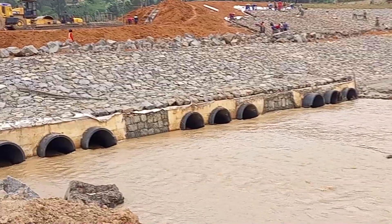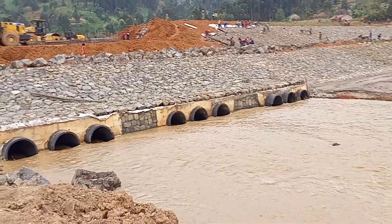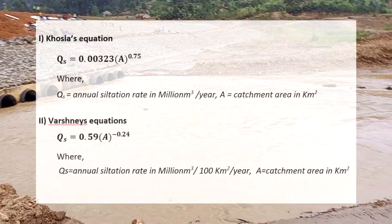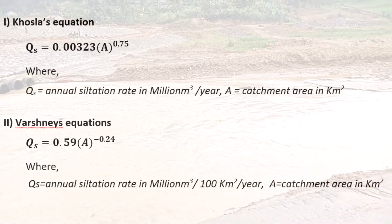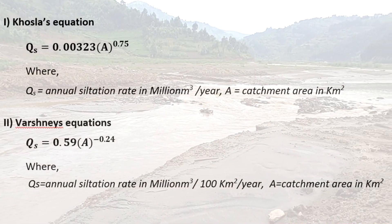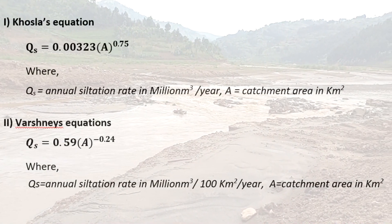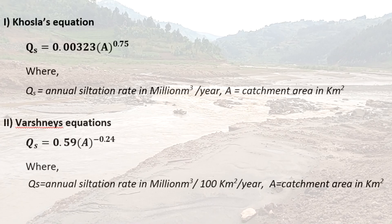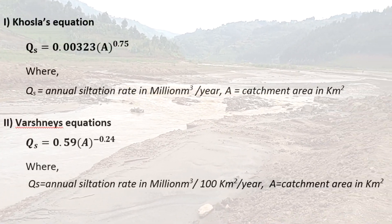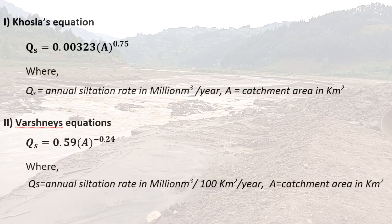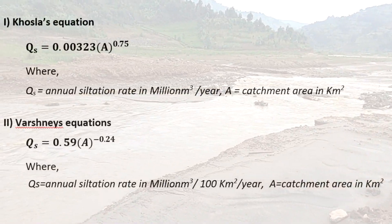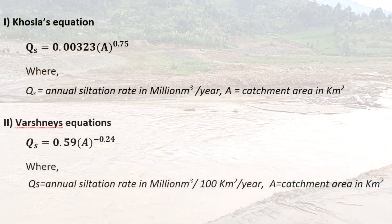There are a number of widely applied empirical equations to estimate sediment transport in rivers. Two of these globally applied methods are Kozla's equation and Varshney's equation. Both equations are developed from data collected from different parts of the world to relate catchment area with sediment empirically.